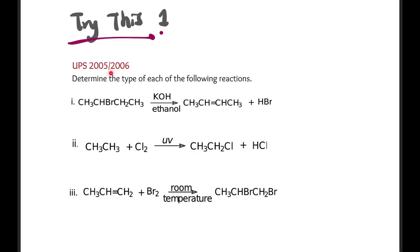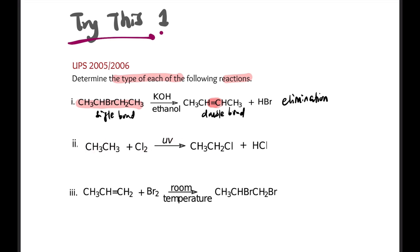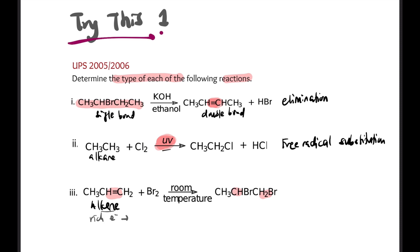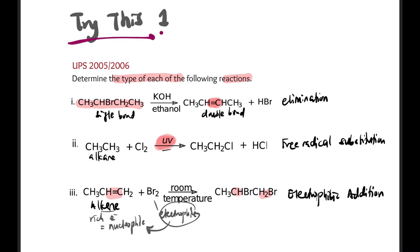Let's try a practice question (UPS 2005-6): determine the type of reaction for each. Question 1: single bond becomes a double bond producing an alkene — that's elimination. Question 2: involves alkane with UV light — that's free radical substitution. Question 3: alkene reacts with something and loses its double bond; alkene is electron-rich (nucleophilic site), attacked by an electrophile — that's electrophilic addition.